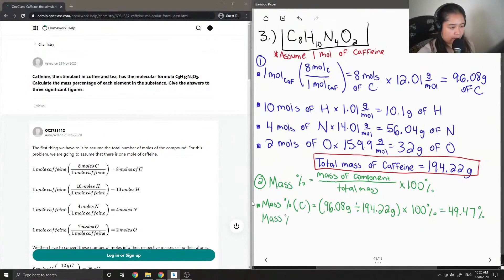Let's do the same thing for hydrogen. 10.1 grams divided by 194.22 grams times 100 gives us a percentage of 5.20%.